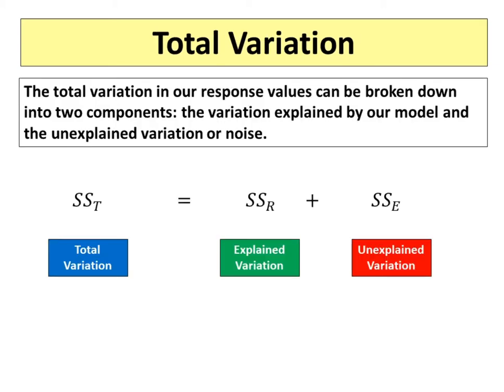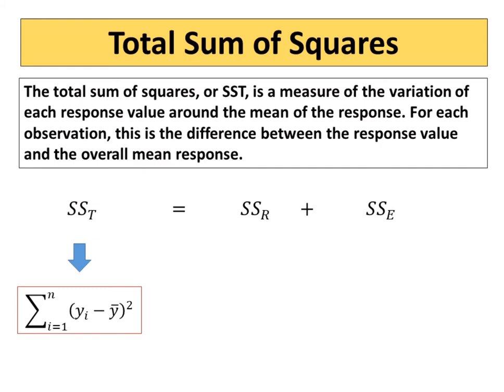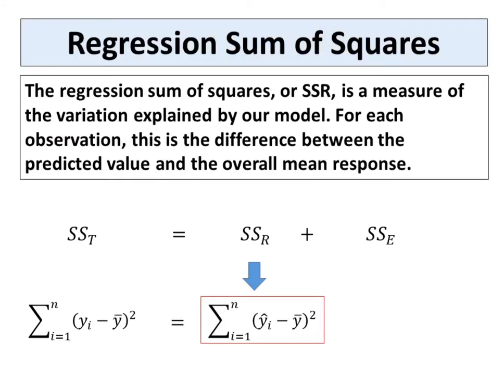The total variation in our response values can be broken down into two components: the variation explained by our model and the unexplained variation or noise. The total sum of squares, or SST, is a measure of the variation of each response value around the mean of the response. For each observation, this is the difference between the response value and the overall mean response.